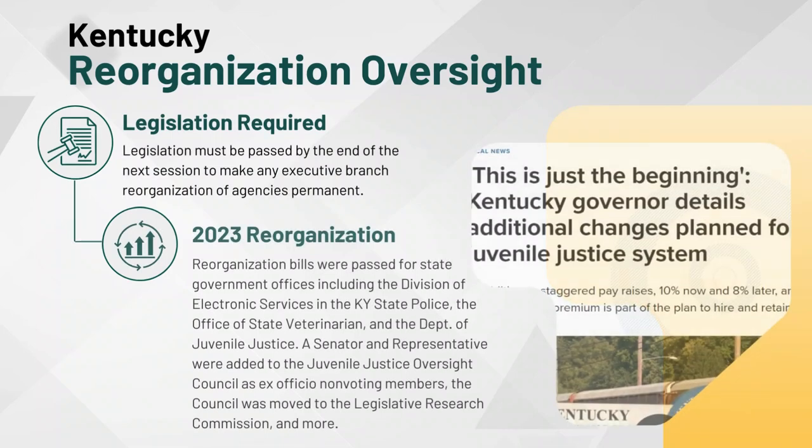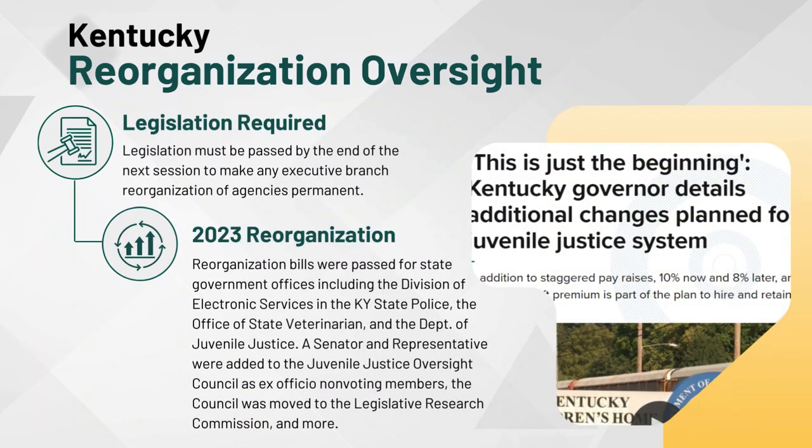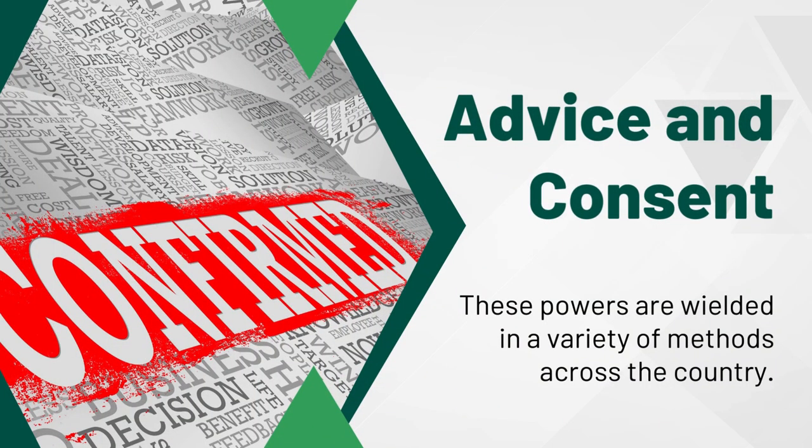Kentucky's reorganization powers require legislation to pass by the end of the next session to make any executive branch reorganization of agencies permanent. In the 2023 regular session of the Kentucky General Assembly, reorganization bills were passed for a range of state government offices, including the Division of Electronic Services within the Kentucky State Police, the Office of State Veterinarian, and the Department of Juvenile Justice. The juvenile justice reorganization included adding a senator and a representative as ex-officio non-voting members to the Juvenile Justice Oversight Council, moved this council from the Justice and Public Safety Cabinet to the Legislative Research Commission, and required uniforms for correctional officers within juvenile detention facilities. Advice and consent powers are wielded in a variety of methods across the country.